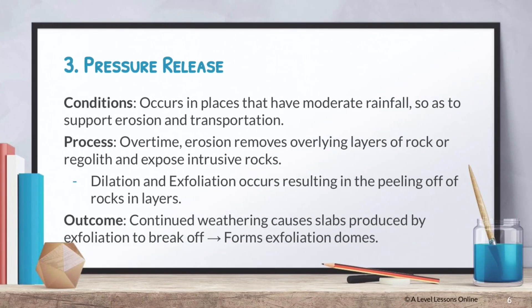Pressure release — what is pressure release? Pressure release is essentially a case of exfoliation, whereby dilation and exfoliation actually take place. Basically, your layers of rock are being peeled off from one another — think of it like peeling a banana, you're just peeling off the rocks in layers. As a result, pressure is being released, and this causes a lot of stress to the rock, causing it to break down. Usually this tends to occur as a result of erosion: when erosion occurs, the rocks are exposed and the inner and outer layers start to peel off as a result.